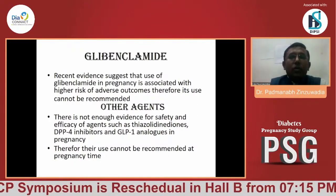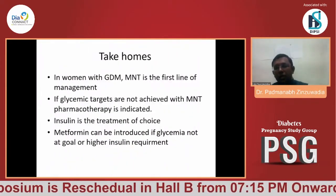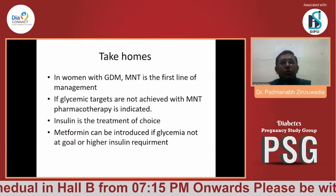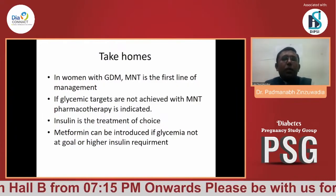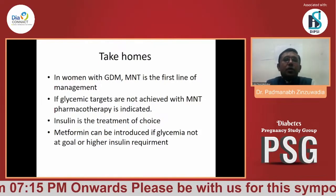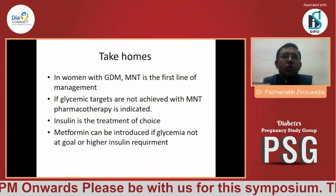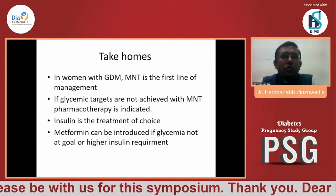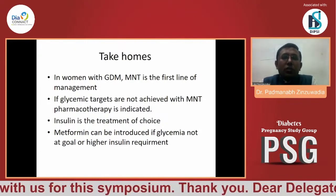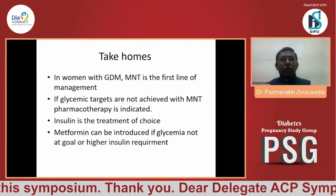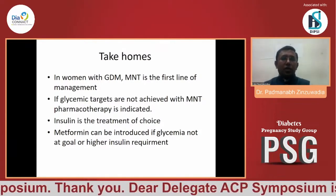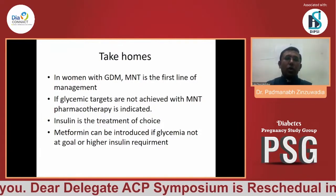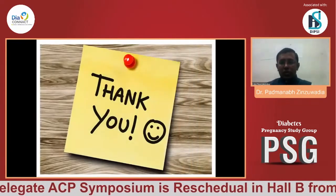In our case, the patient delivered at full term with a baby weight of 3.2 kg without any complications. The key take-homes: in women with GDM, MNT is the first line of management. If glycemic targets are not achieved with MNT, pharmacotherapy is indicated. Insulin is the treatment of choice, and metformin can be introduced if glycemic goals are not met or higher insulin doses are required. Thank you for listening.